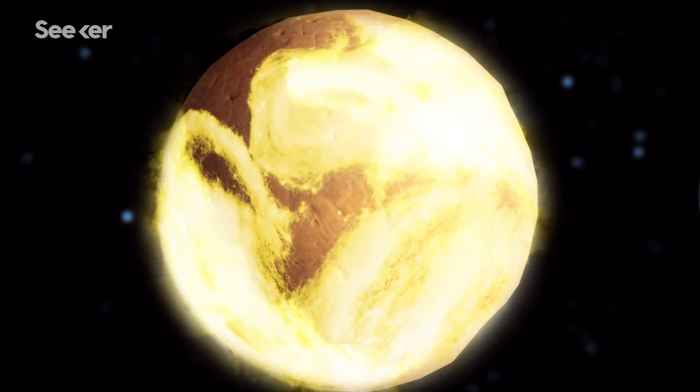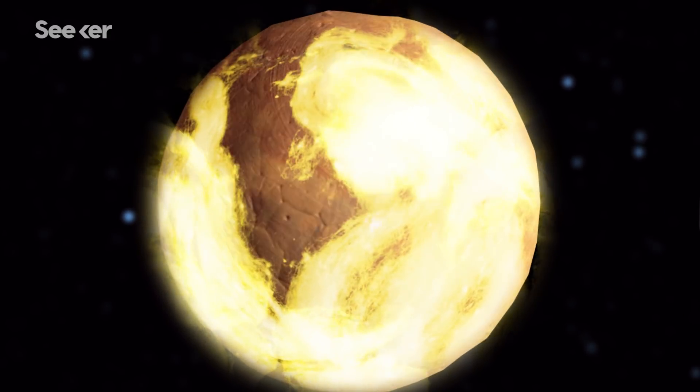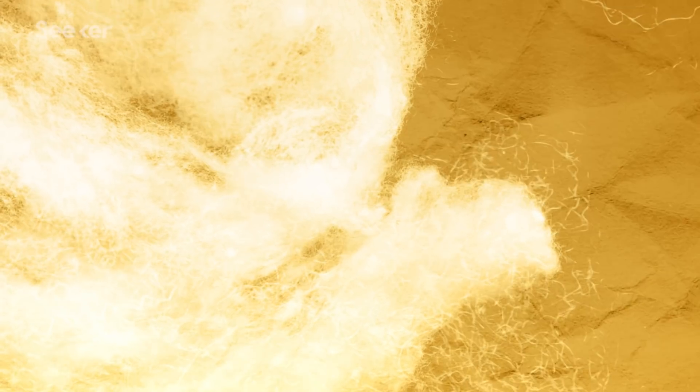And while Venus's atmosphere is a total hellscape, it does give us something to work with. At about 30 miles above the surface, Venus's atmosphere is pretty Earth-like, with atmospheric pressure similar to our planet.